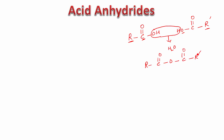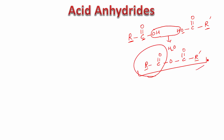As mentioned, R and R' may be the same or different. This overall structure is called an acid anhydride, and it is made up of two carboxylic acid groups.